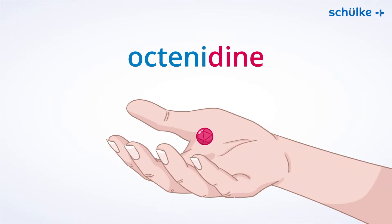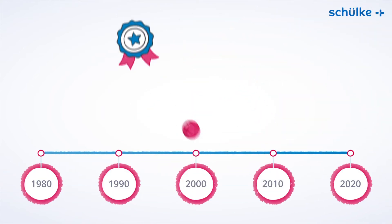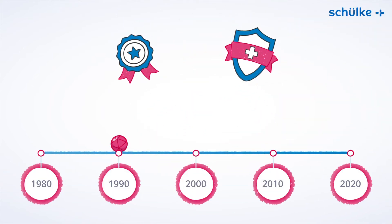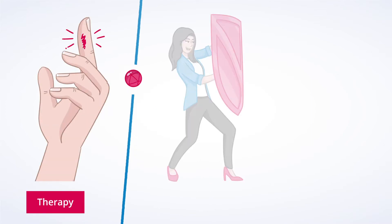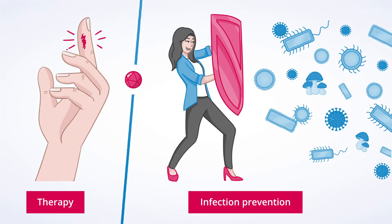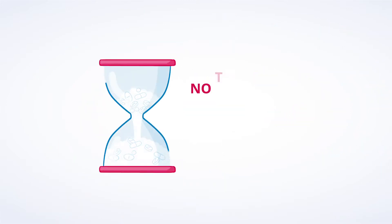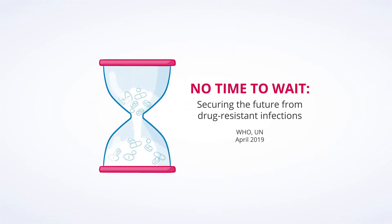Octenidin is an antimicrobial molecule that's been successfully deployed for more than three decades, for therapy but also for effective infection prevention. Octenidin gains more and more importance due to increasing antibiotic resistance.